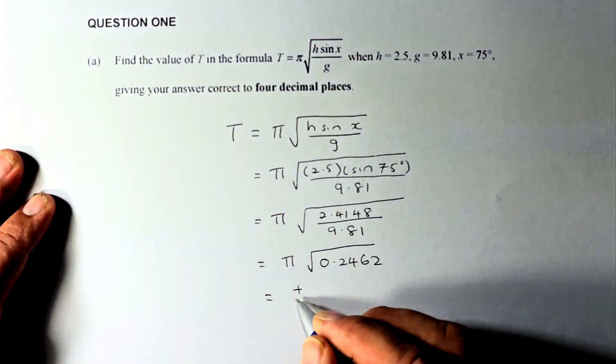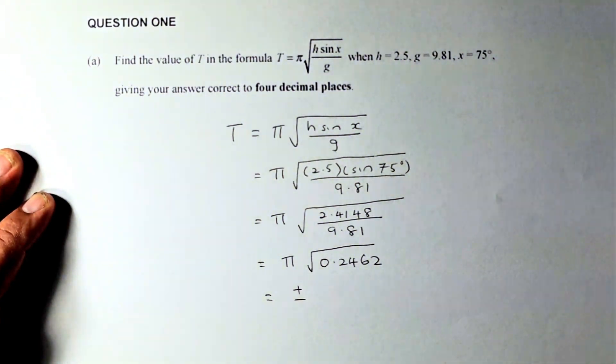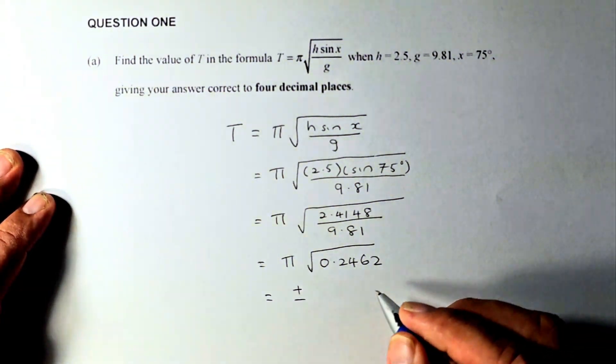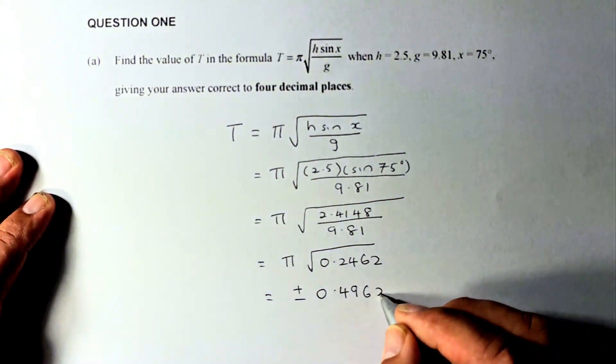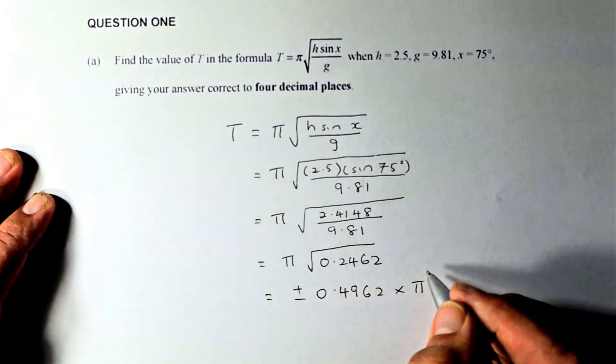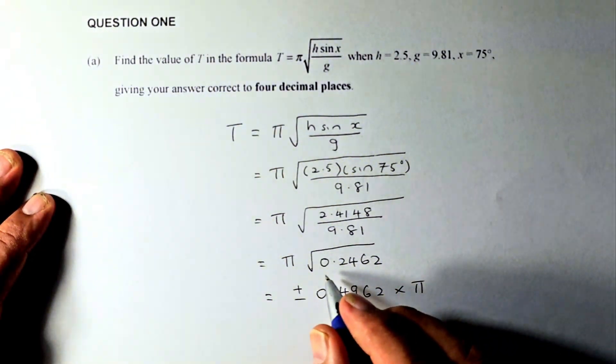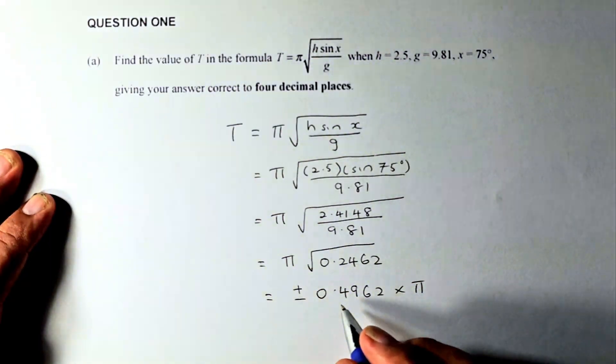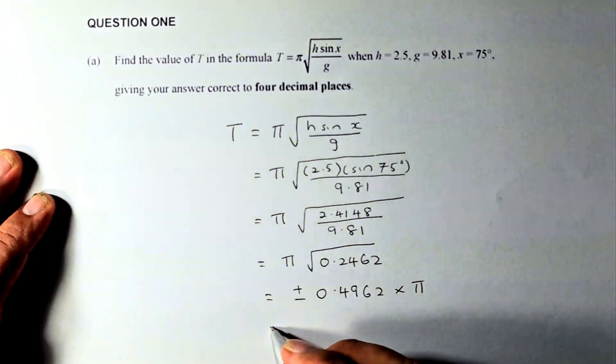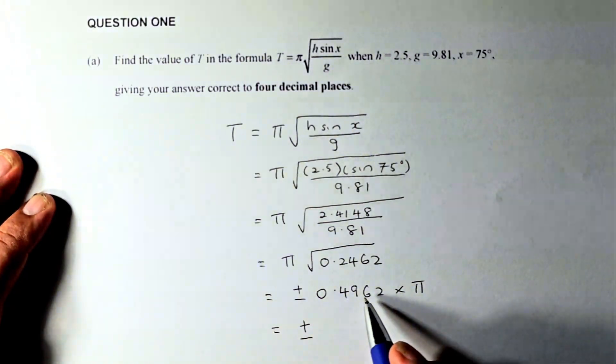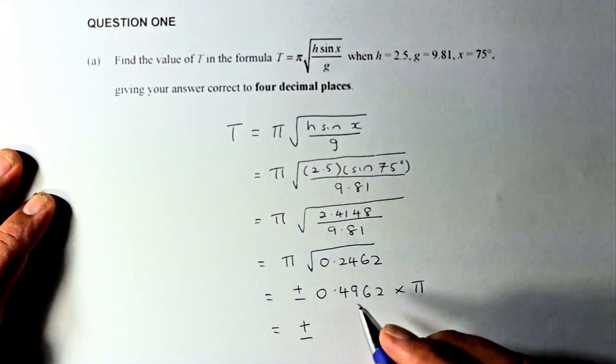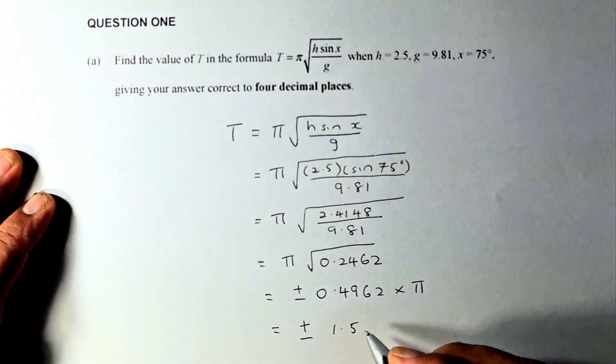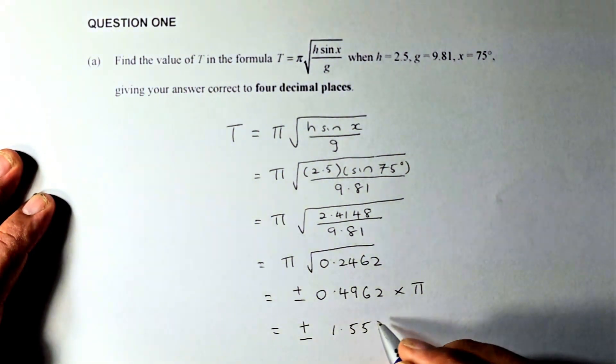Now when you square 0.2462 the answer is going to be, if you know the square root of any number is going to be a plus minus and the answer is going to be plus minus 0.4962 and don't forget we need to multiply by pi. So square root of 0.2462 is going to be plus minus of 0.4962 and now the answer is going to be plus minus you take 0.4962 times pi. The answer is going to be plus minus 1.5588.